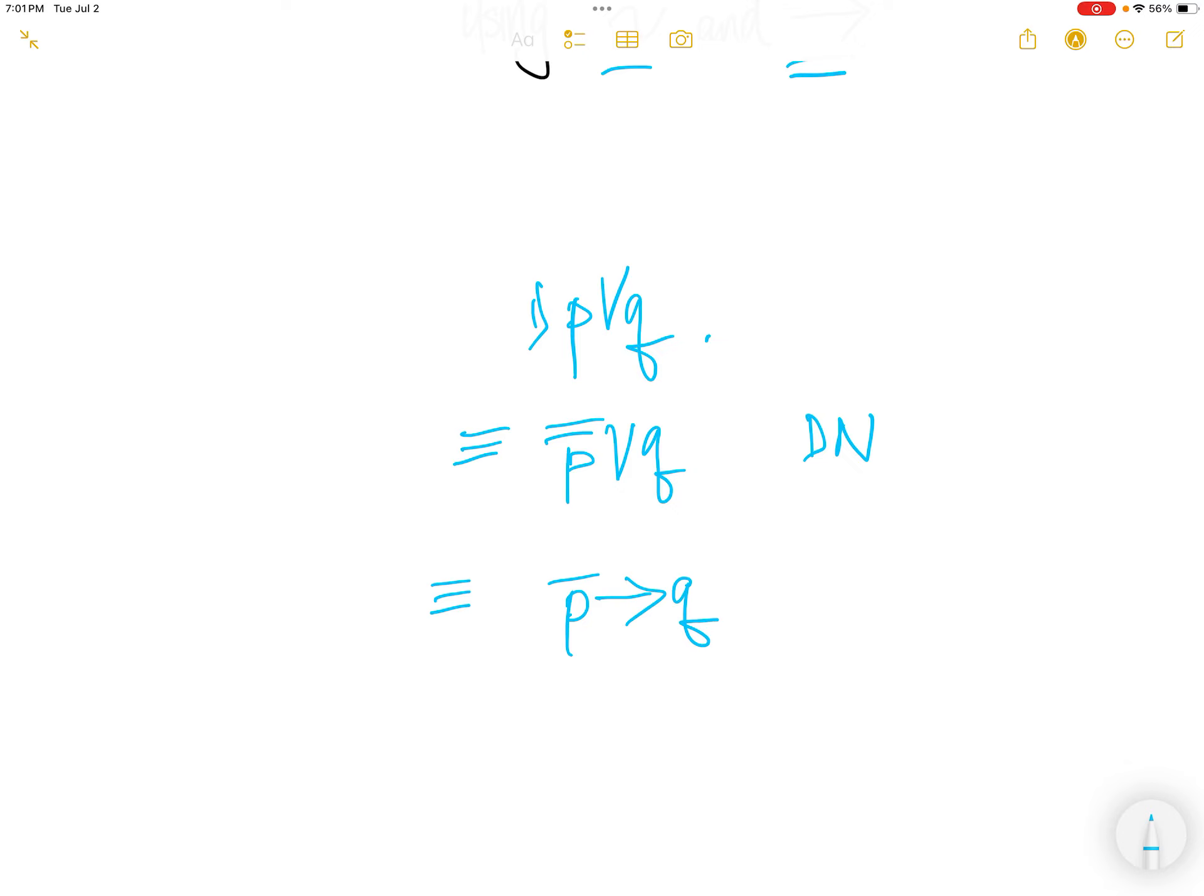Okay, so we have transformed p or q to NOT p imply q.